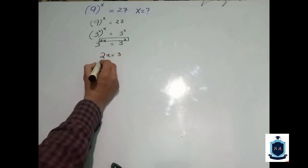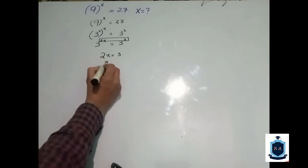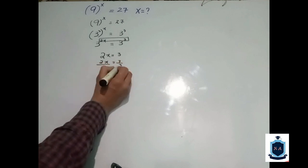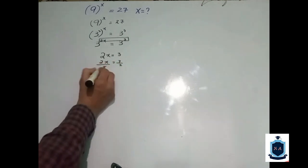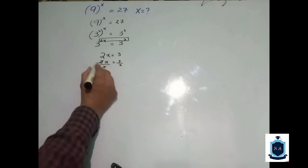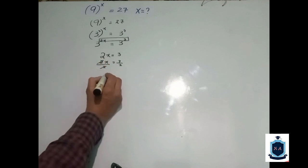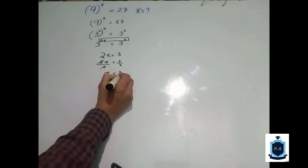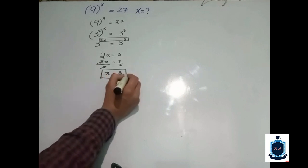Then we have to do 2x divided by 2 and 3 divided by 2. You divide by 2 on both sides, then 2 is cancelled. x equal to 3 upon 2. The answer of this equation is x equal to 3 upon 2.